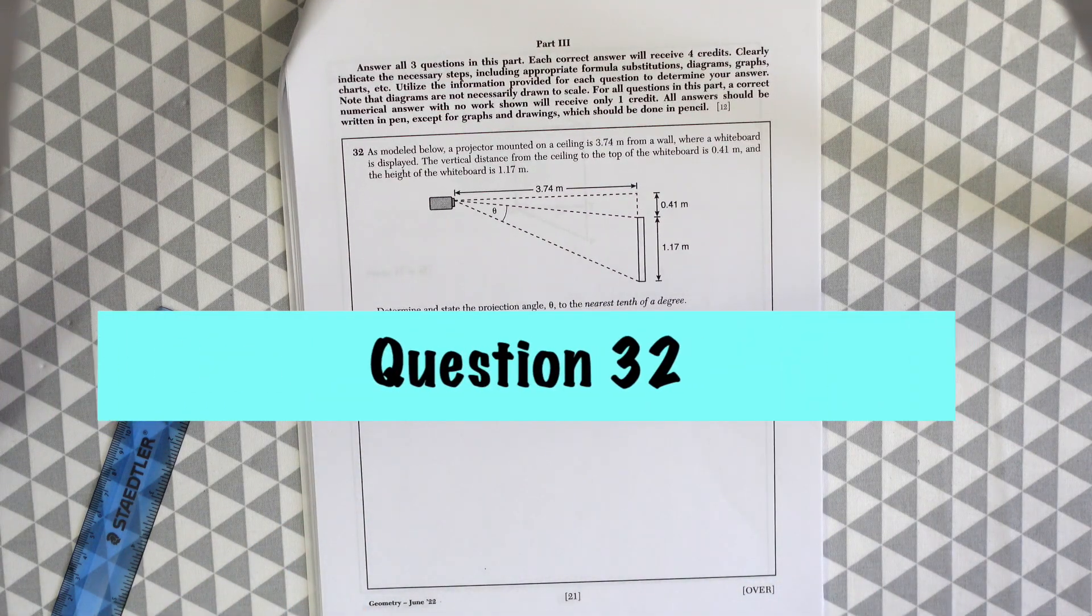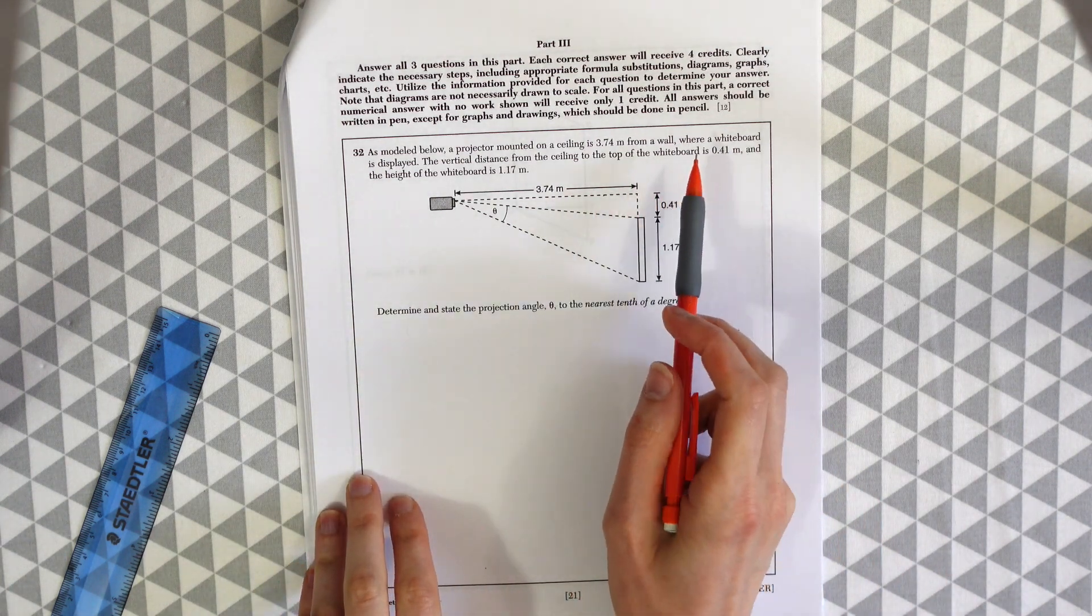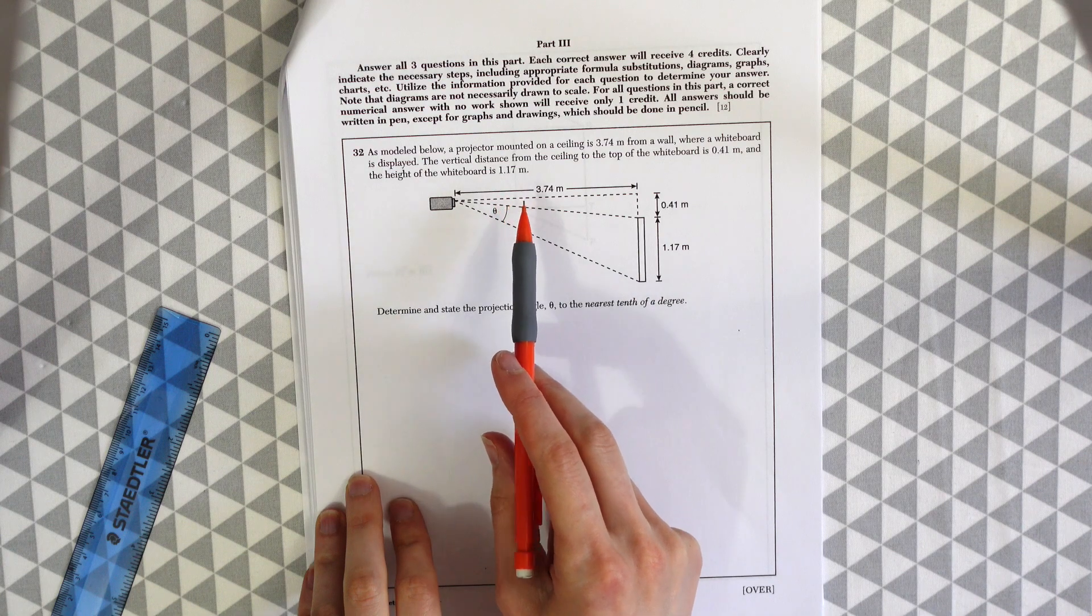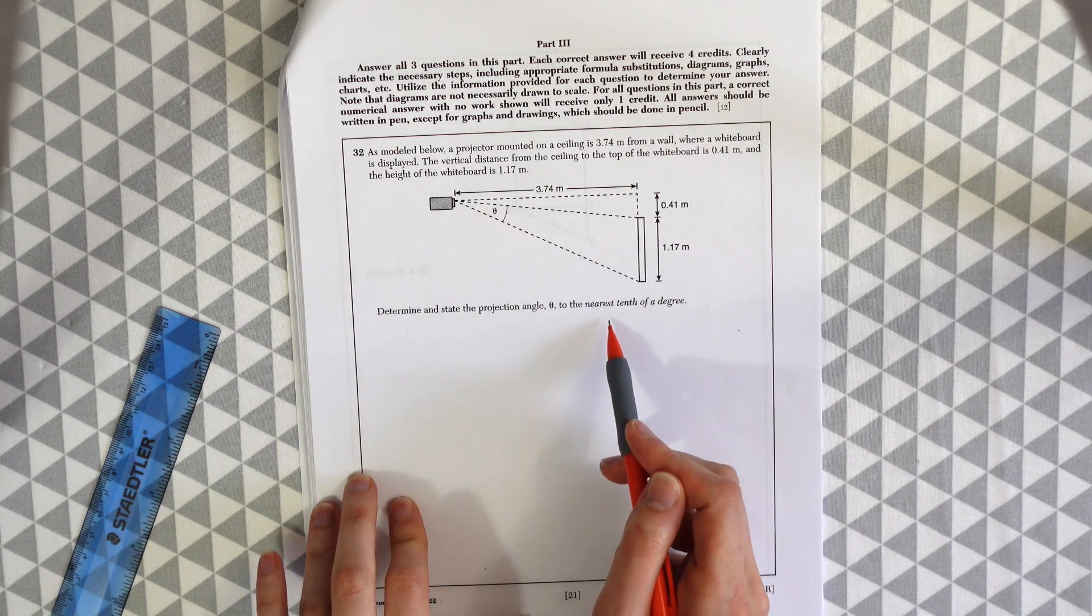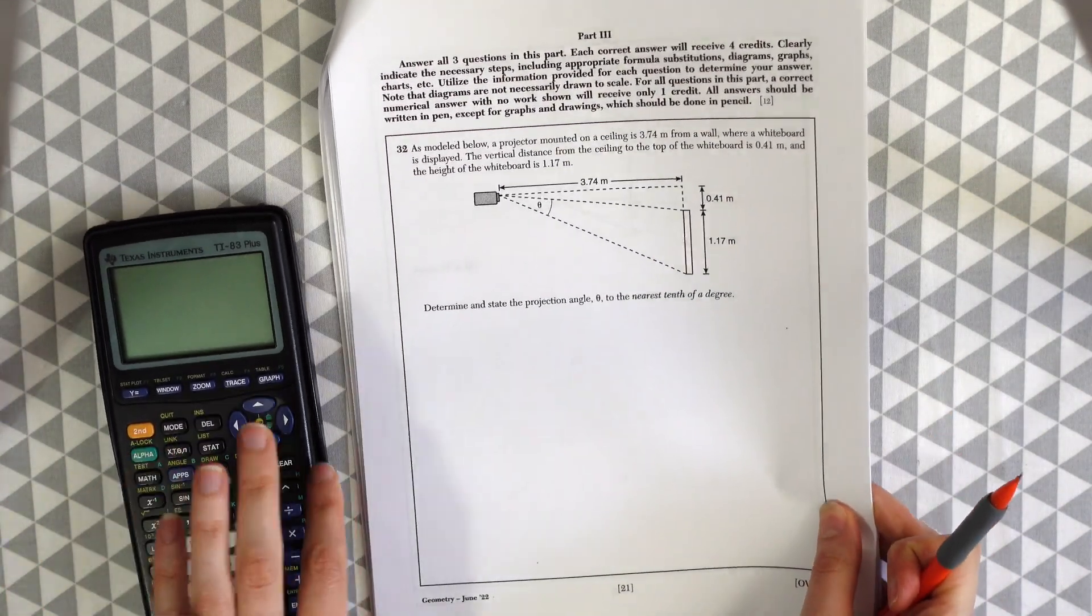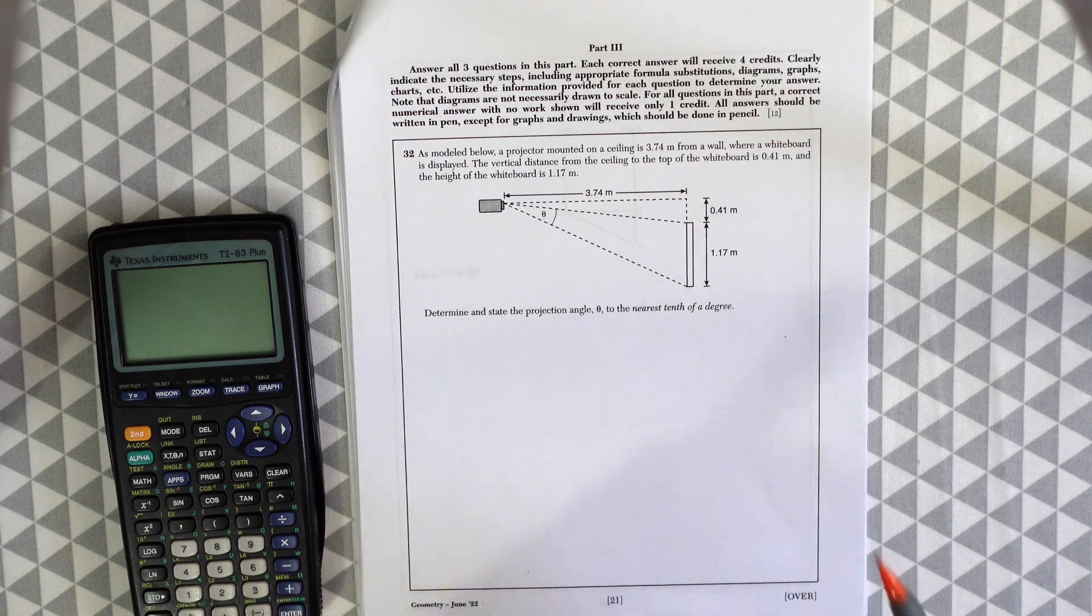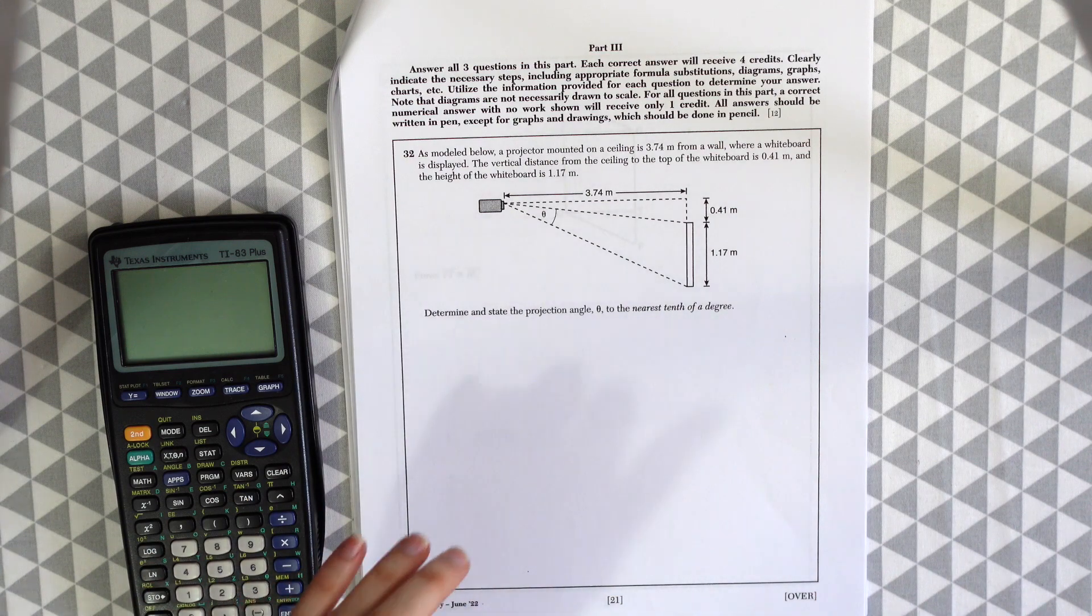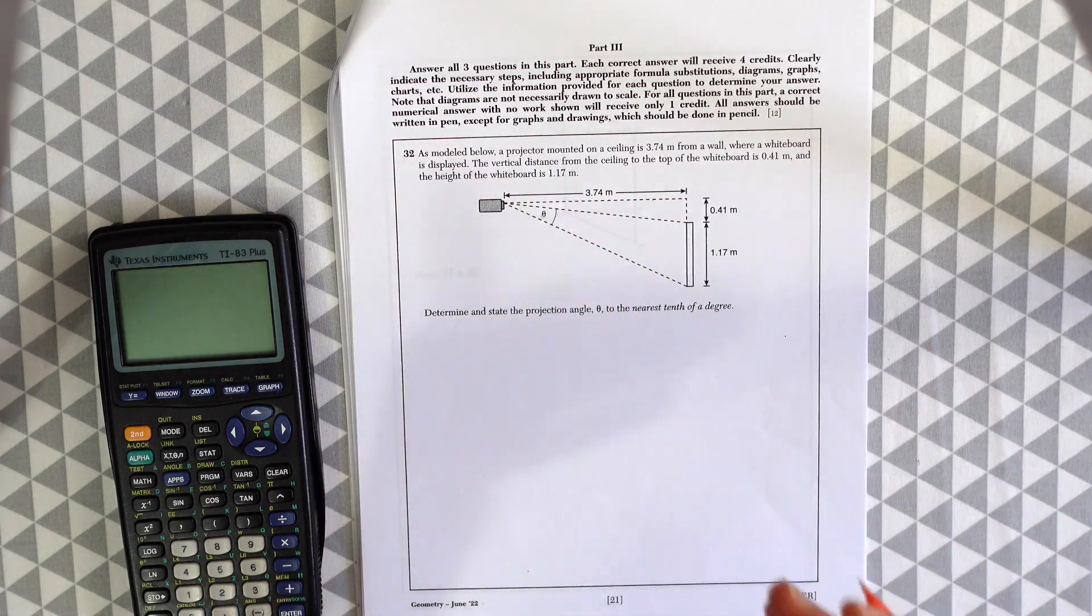On to part three for question 32. As modeled below a projector mounted on a ceiling is 3.74 meters from a wall where a whiteboard is displayed. The vertical distance from the ceiling to the top of the whiteboard is 0.41 meters and the height of the whiteboard is 1.17 meters. Determine and state the projection angle theta. So they want us to find angle theta right here to the nearest tenth of a degree. There's so much different information that they give us for this question and we really have to have kind of a plan before we just jump into it because you might start going in a different direction. So when I first look at this question I started solving for this side but that's not what we're supposed to do here.